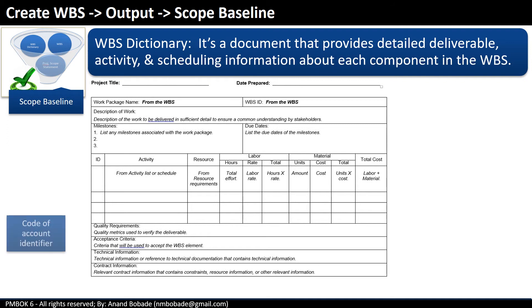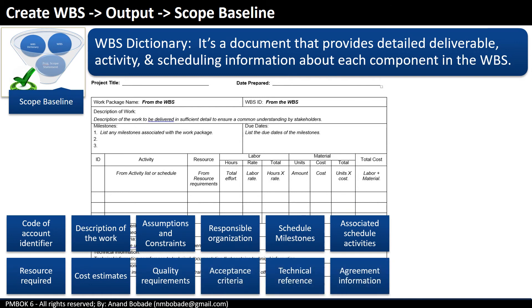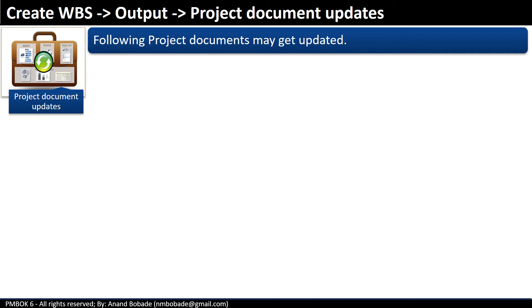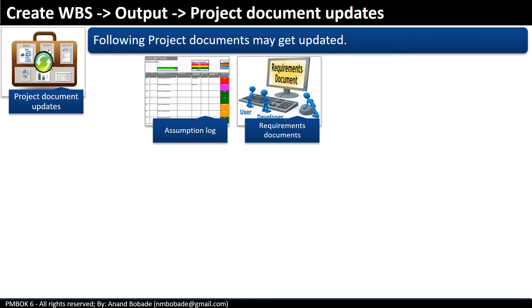One common mistake made during exams is thinking the output of Create WBS is just the WBS — remember that WBS is inside the scope baseline, so the key output is the scope baseline. WBS dictionary is a document that provides detailed deliverables, activity and schedule information about each component inside the WBS. It contains information such as: code of account identifier, description of work, assumptions and constraints, responsible organization, schedule milestones, associated schedule activities, resources required, cost estimate, quality requirements, acceptance criteria, technical references, and agreement information if that component is outsourced. All this additional information helps us understand WBS better, and all of it together — WBS, project scope statement, and WBS dictionary — forms the scope baseline. Another output is project document updates: the assumption log and requirements documentation may get updated as items are created, updated or elaborated as a result of the Create WBS process.